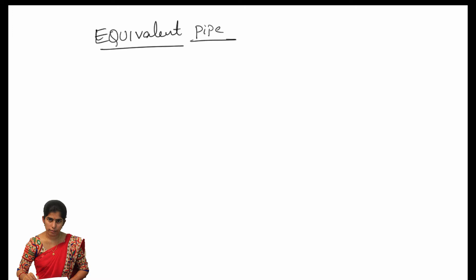First of all, we have to know the exact definition of equivalent pipe. Equivalent pipe is nothing but a pipe which has a uniform diameter, having loss of head and discharge equal to the loss of head and discharge of a compound pipe consisting of several pipes of different lengths and diameters.